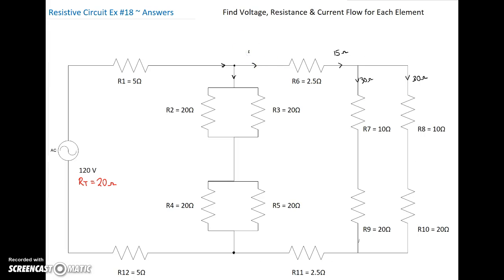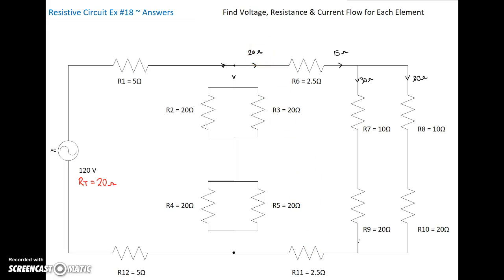2.5 plus 15 gives us 17.5, plus another 2.5 gives us 20 ohms from there over. So once you see the patterns, you can see that this is a series circuit — all of these guys together — and we found these to be 15 ohms plus another 5 to give us 20.